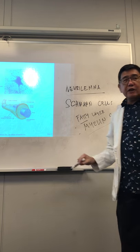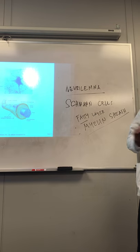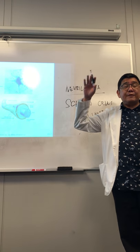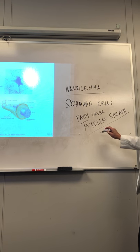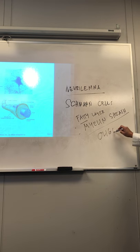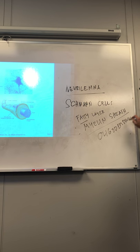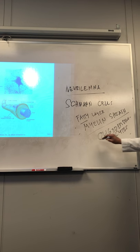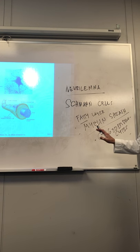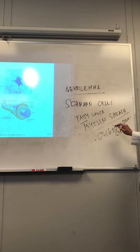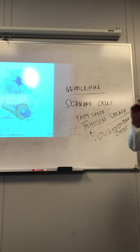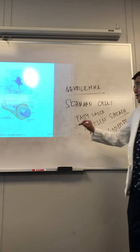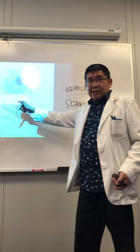If it is in the peripheral nervous system, the myelin sheath is produced by the Schwann cells themselves. However, if it is in the central nervous system, it is produced by another type of cell known as the oligodendrocytes. Oligodendrocytes are one of the supporting cells that produce the myelin sheath in the central nervous system.